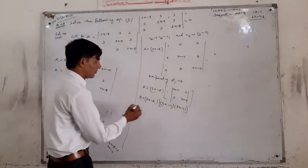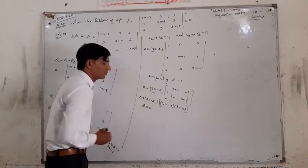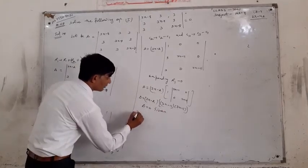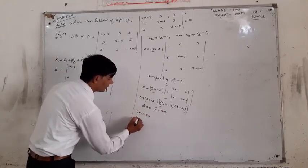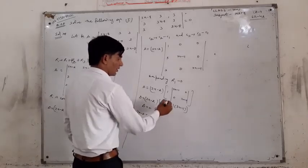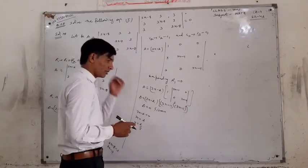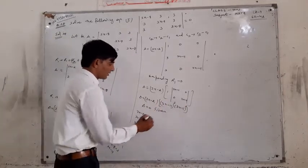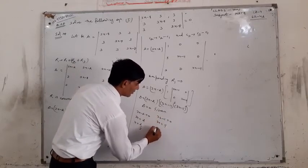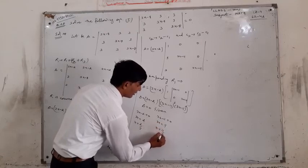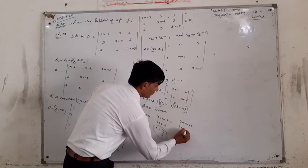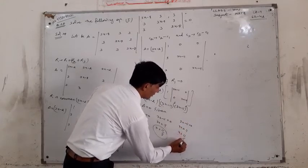Okay. Now, we have to know the iteration of this. 0, 0, 0. So 3x minus 2 is equal to 0, giving 3x is equal to 2, so x is equal to 2 by 3. Then 3x minus 11 is equal to 0, giving 3x is equal to 11, so x is equal to 11 by 3.